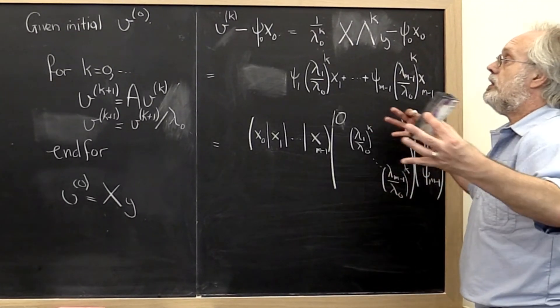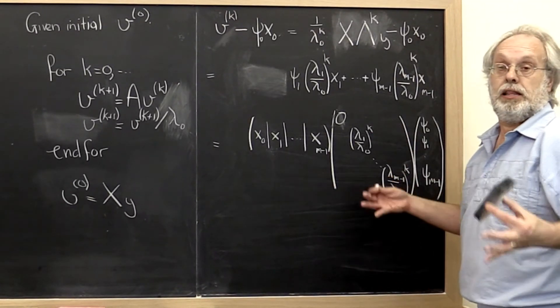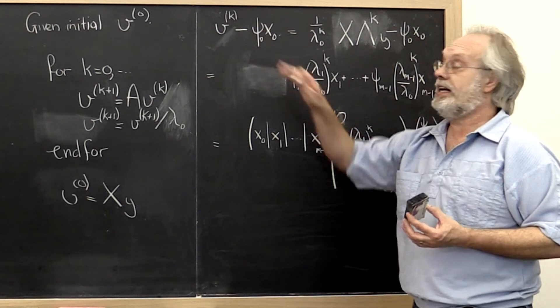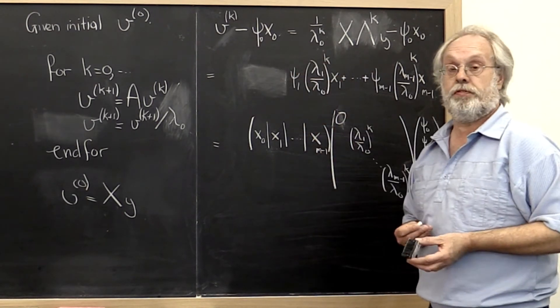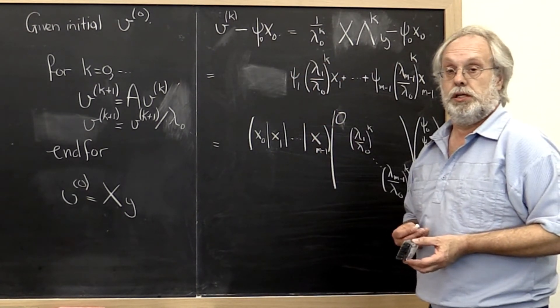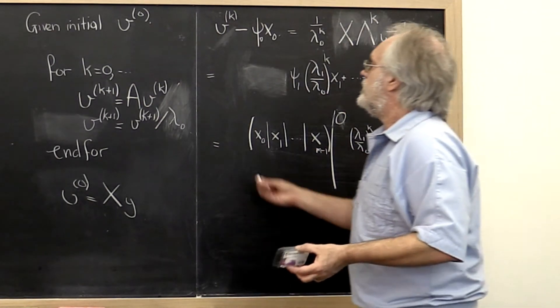Now we can look at what happens to the length of this difference. We'd like for the norm of the difference to go to 0. And let's pick a norm. We'll take the 2-norm.